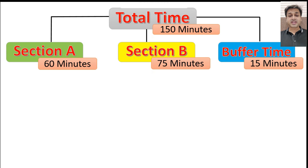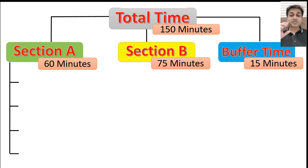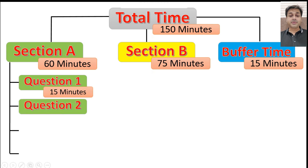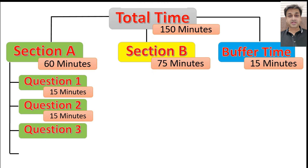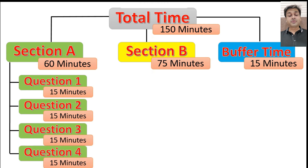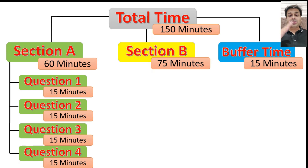Now the 60 minutes for Section A — how are we going to break that time? You've got to attempt four questions in 60 minutes, so obviously: 15 minutes per main question. Question 1: 15 minutes. Question 2: 15 minutes. Question 3: 15 minutes. Question 4: 15 minutes. Each main question has three sub-questions, so you are giving 5 minutes to each sub-question. You should not finish one sub-question and look at the watch — finish one main question and then check the watch. On average, you should finish it within 15 minutes.